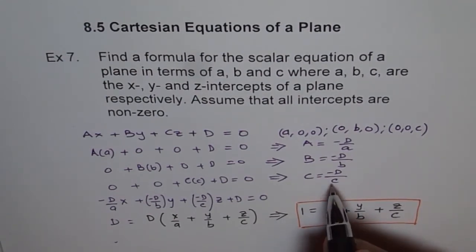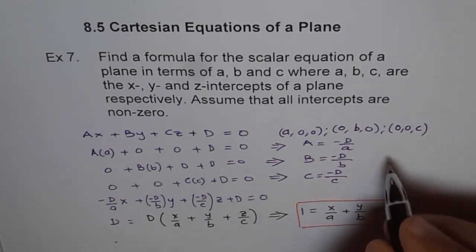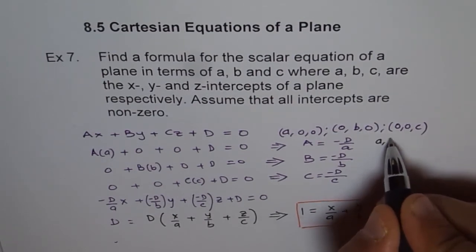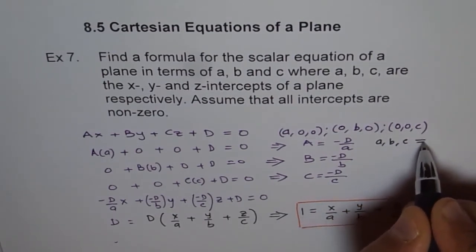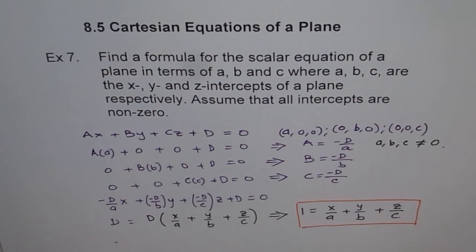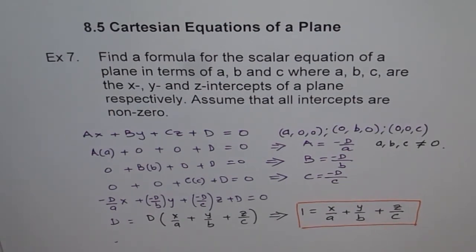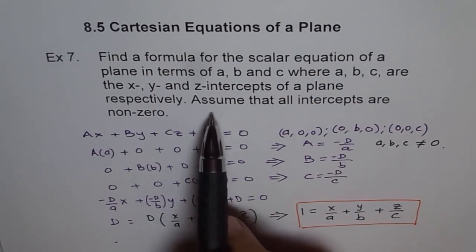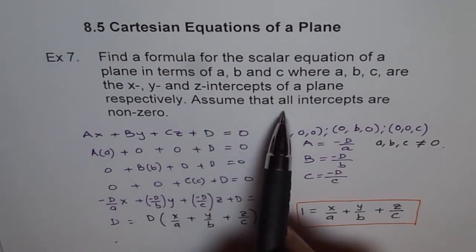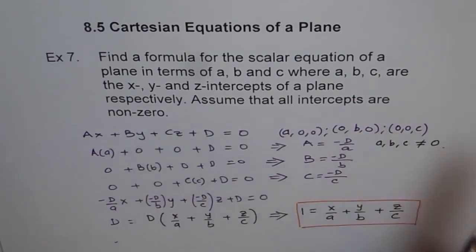When we write them in denominator, so that means we have A, B and C are not equal to 0. Only then you can use this equation. So that is how we get and that is why this condition is also given to you. Assume that all intercepts are non-zero.